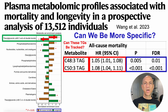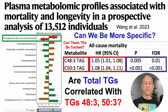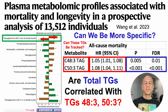Can these triglycerides be tracked? The goal is to potentially optimize these biomarkers to maximize health and longevity. If we track total triglycerides, is that a proxy measure of levels of TG48-3 and TG53? In other words, if total triglycerides are low, would we even need to measure levels of these two specific triglycerides?